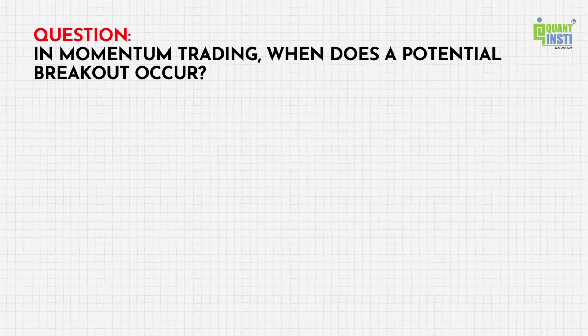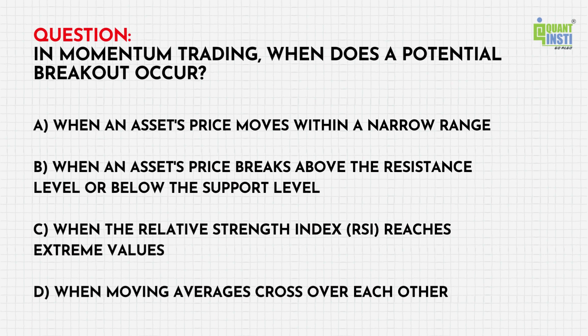Before we begin, can you answer this question? In momentum trading, when does a potential breakout occur? A. When an asset's price moves within a narrow range. B. When an asset's price breaks above the resistance level or below the support level. C. When the relative strength index, RSI, reaches extreme values. D. When moving averages cross over each other. Let us know your answers in the comments section below. The answer will be announced at the end of this video.